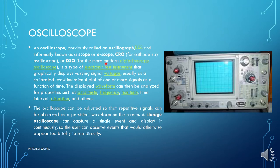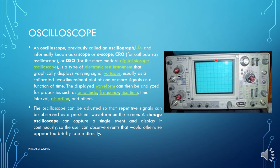An oscilloscope, previously called an oscillograph and informally known as a scope, o-scope, CRO, or DSO — for modern digital storage oscilloscope — is a type of electronic test instrument that graphically displays varying signal voltages, usually as a calibrated two-dimensional plot of one or more signals as a function of time. Basically, it shows the signal strength in the form of a waveform on screen.